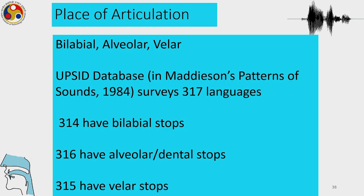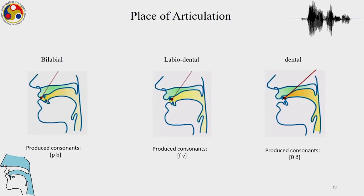Among all these distinctions, the ones most common in languages are the bilabial, alveolar, and velar place of articulation. In Maddieson's Patterns of Sounds, a survey of 317 languages shows 314 bilabial stops, 316 alveolar/dental stops, and 315 velar stops. Let us play these short videos of places of articulation so that we again see the basic differences between the places of articulation.